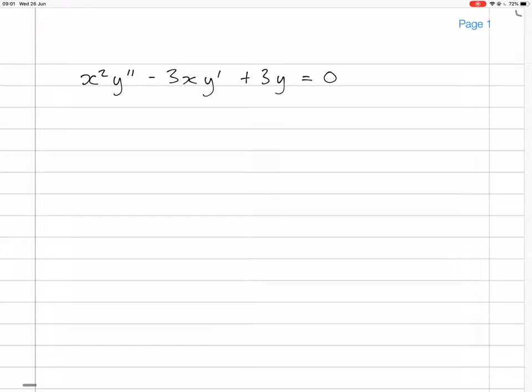So, if y equals x, then we have y dash equals 1, and y dash dash equals 0. Sorry, let's set it up properly. Okay, so if we let y equal x, then y dash equals 1, and y dash dash equals 0.